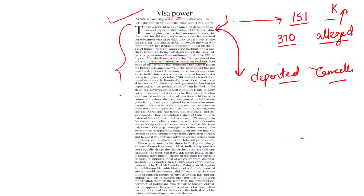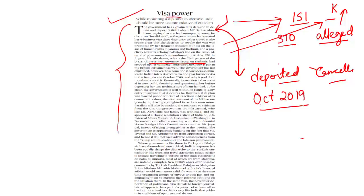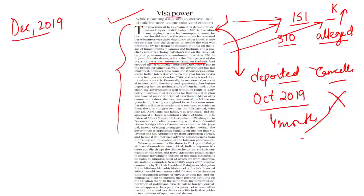The editorial raises the question: if Debbie Abrahams' ties with ISI were known, why was she granted a visa in October 2019, and why did it take 4 months to cancel it? This is compared to December 2019, when External Affairs Minister S. Jaishankar was on a visit to the US and had to meet the House Foreign Affairs Committee.